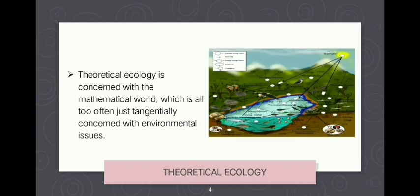Theoretical ecology is concerned with the mathematical world, often only tangentially concerned with environmental issues. It has its own journals and sophisticated debates with little real-world application. It is best for speculating on what might happen under certain mathematical assumptions, and is considered the most respected branch of ecology due to the exquisite mathematics involved and its avoidance of real-world ecological complications — essentially ecology's physics.